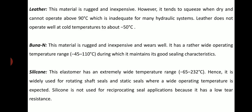Leather: this material is rugged and inexpensive. However, it tends to squeeze when dry and cannot operate above 90°C, which is inadequate for many hydraulic systems. Leather does not operate well at cold temperatures down to about minus 50°C. Buna-N: this material is rugged and inexpensive and wears well. It has a rather wide operating temperature range of minus 45°C to plus 110°C, during which it maintains its good sealing characteristics.